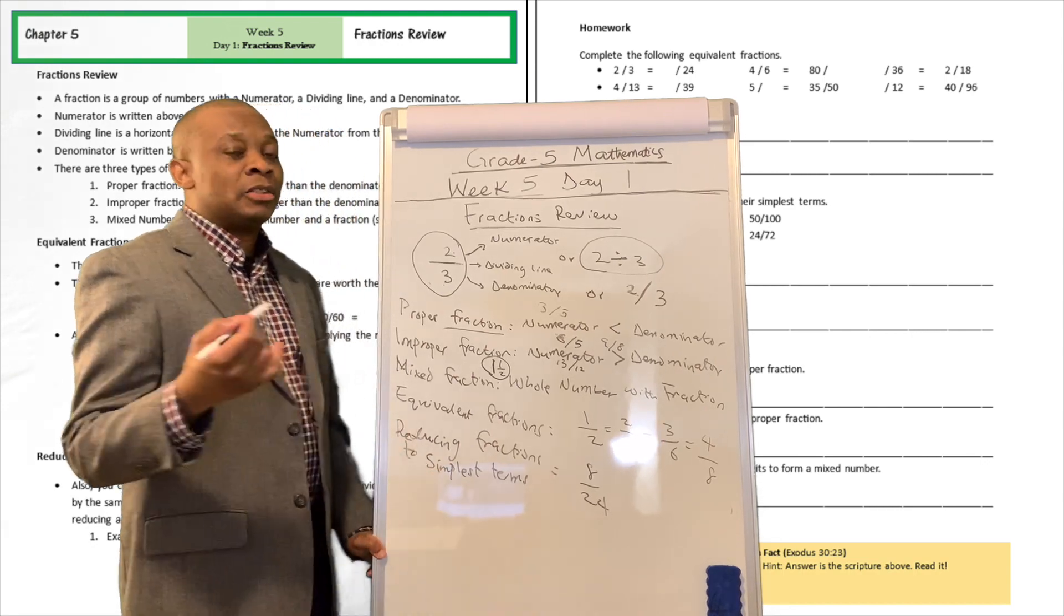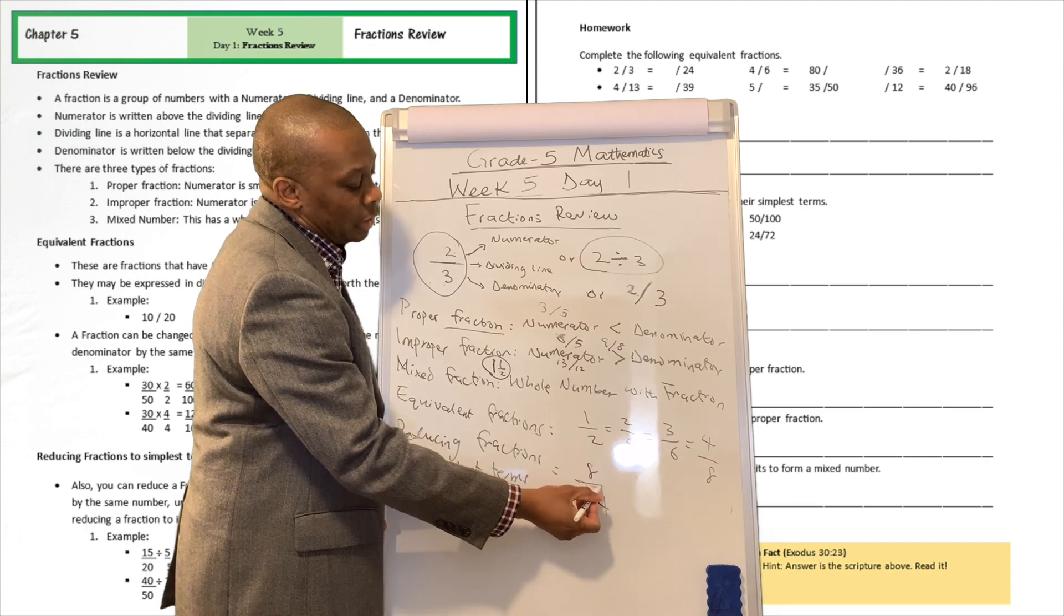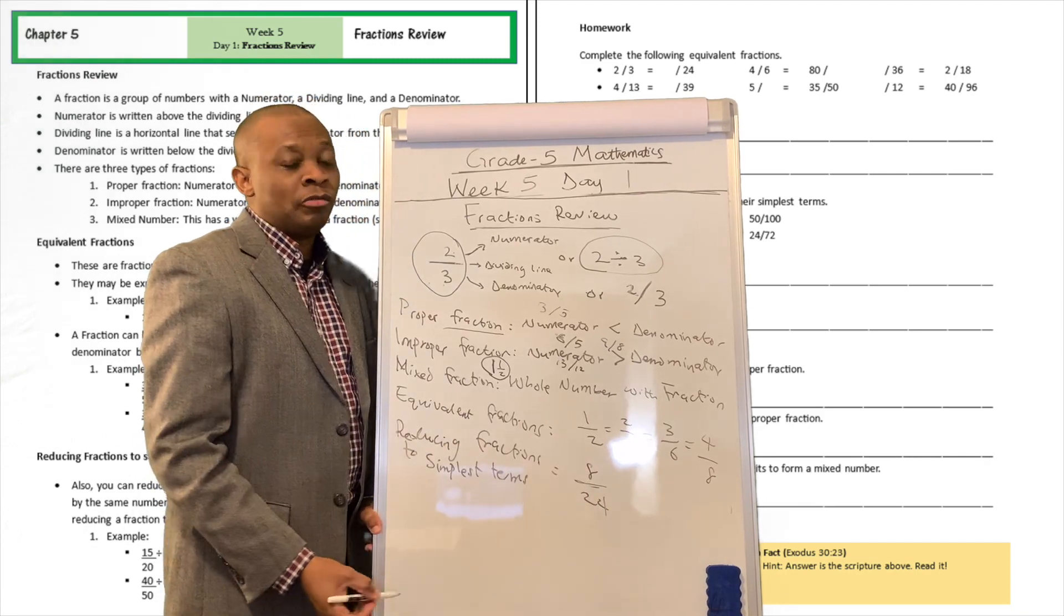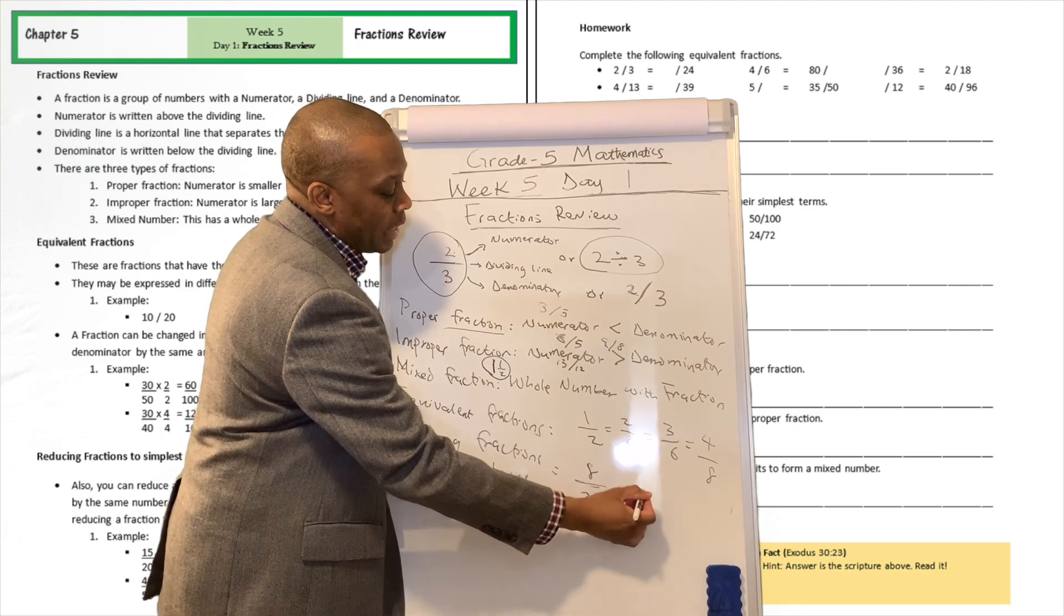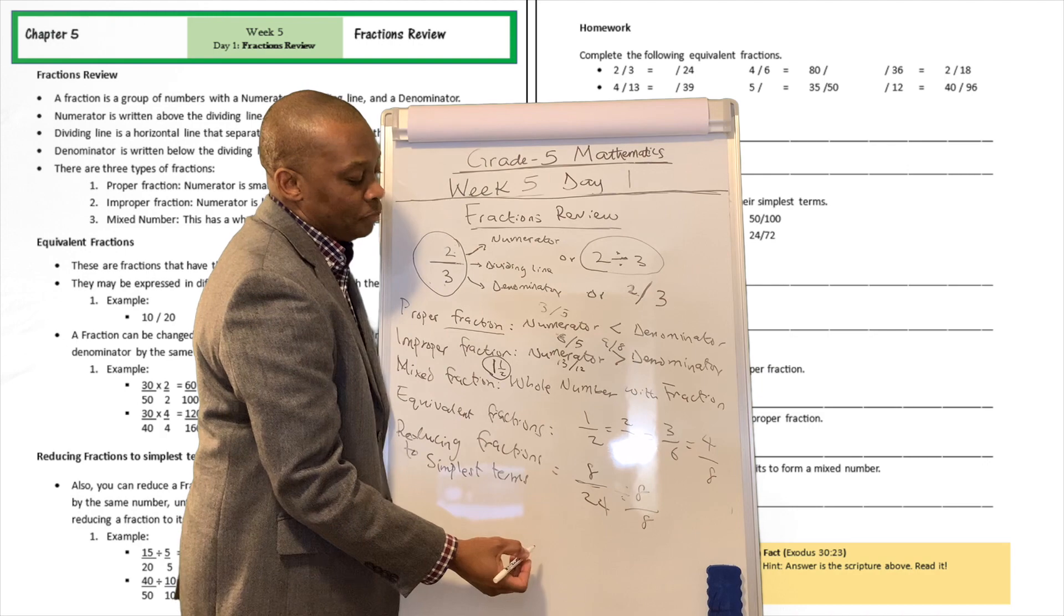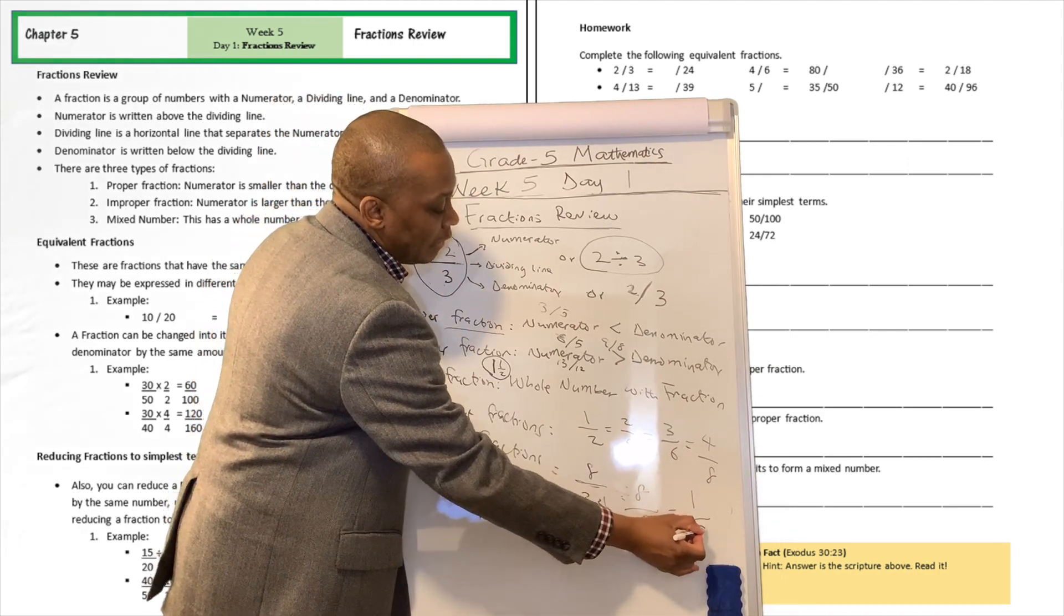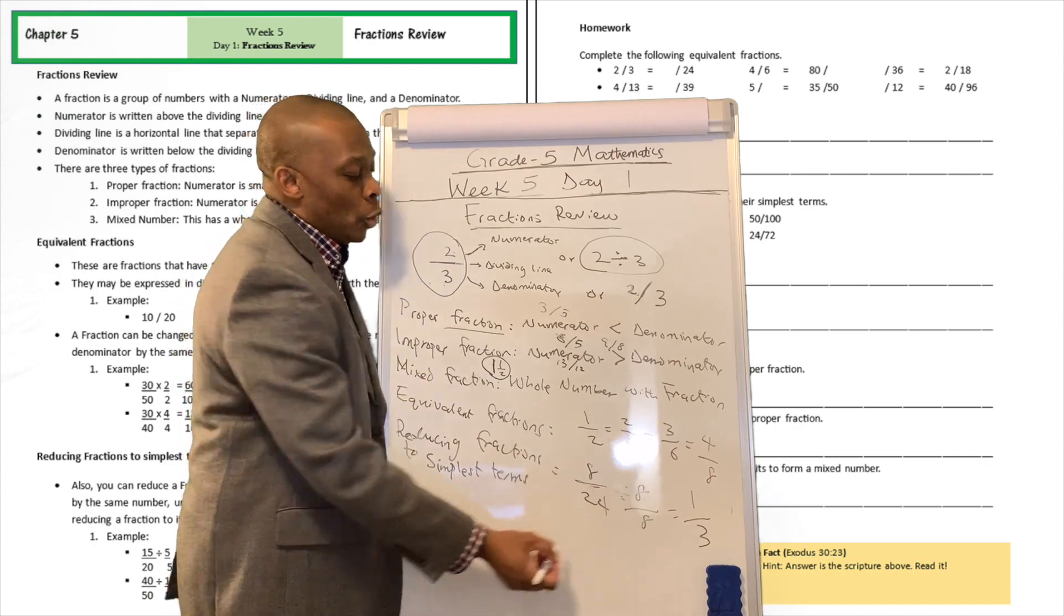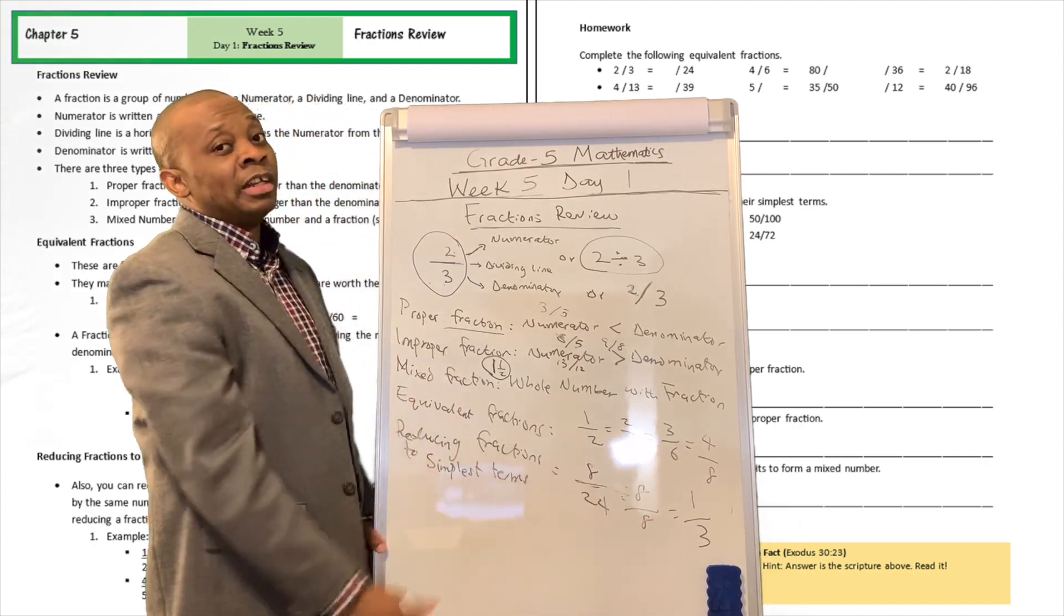Reducing fractions to simplest terms means that you start with a fraction like this, eight divided by 24, and then you can say divided by eight over here and then divided by eight over there. Well, if you were to do that, you're going to have one out of three. So one-third is the simplest form of eight divided by 24.